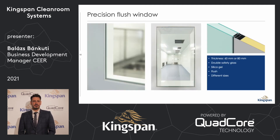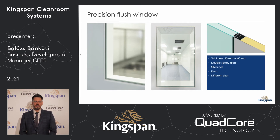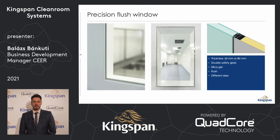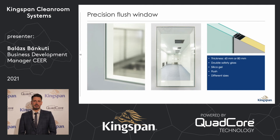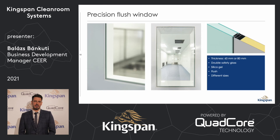On the next slide you see our precision windows. The windows are flush-integrated in the panels, which means you have a flushed connection with no additional frame to cover on the wall. The windows are available in 60 or 80 mm thickness, which fits the precision system.